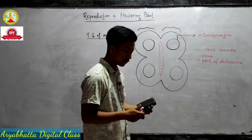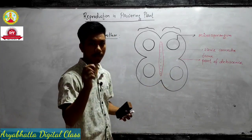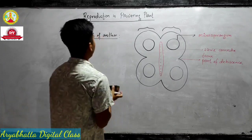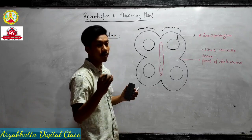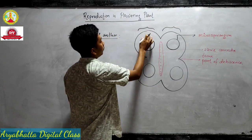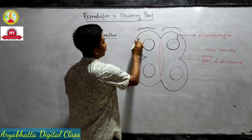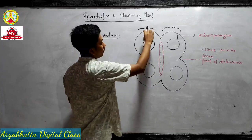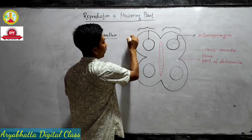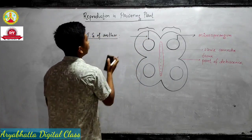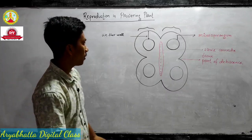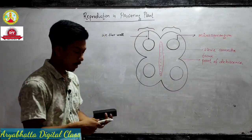We find four small lobe structures known as microsporangia, the sterile connective tissue, and the point of dehiscence. Now we will discuss one by one the layers that are present inside the anther. We need to know the name of each layer along with its function. The structure present between the microsporangium and the anther is known as the anther wall.